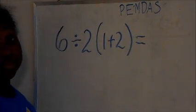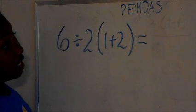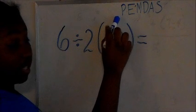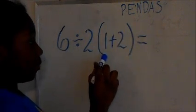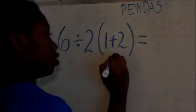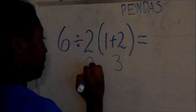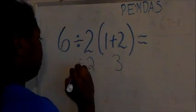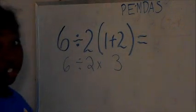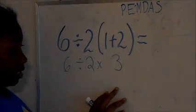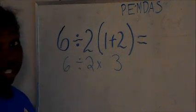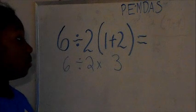Okay, how would you approach this problem? The way I would approach it is using this method the right way. The first thing is P for parentheses, so I would do what's in my parentheses first. One plus two equals three. So I bring that down and I bring the rest of my numbers down. The key to getting the right answer is having a neat, organized space, because if you don't have a neat space, you might not get the right answer.